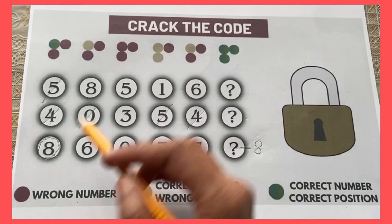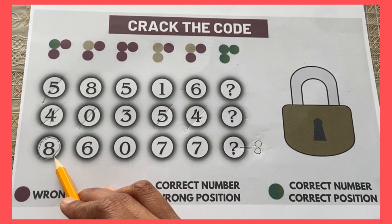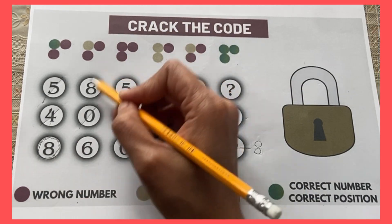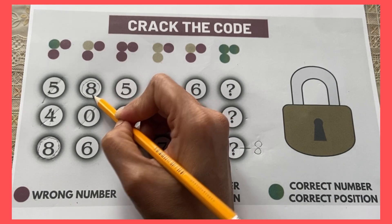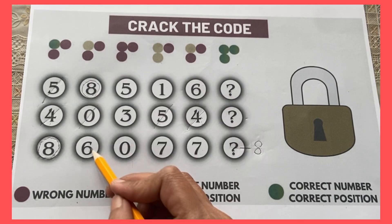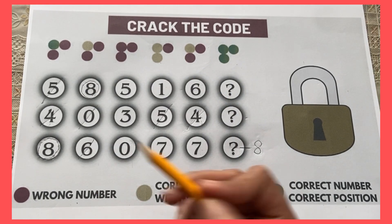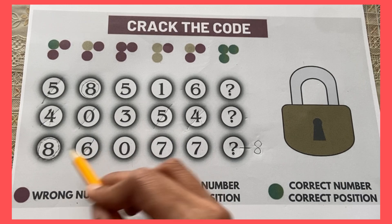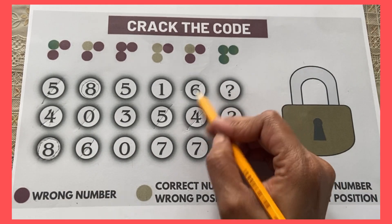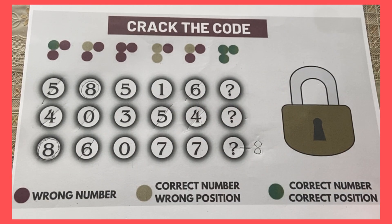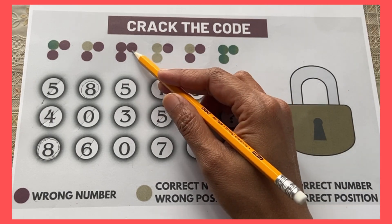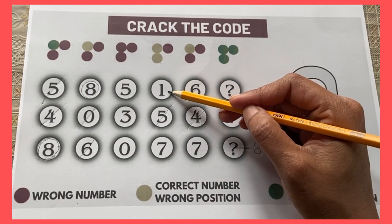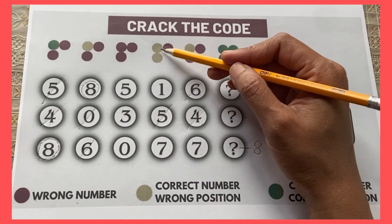We've now completed this column. In the next clue, two numbers are wrong. Eight is confirmed as the correct number here as well. Six is wrong, so we cross out six in the other clues. Eight has already been placed. This column is now complete.